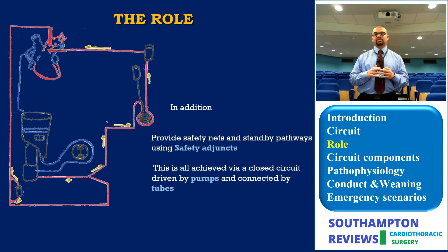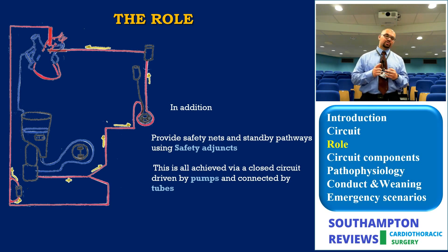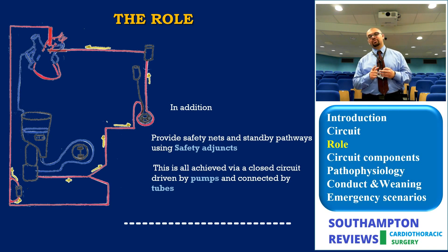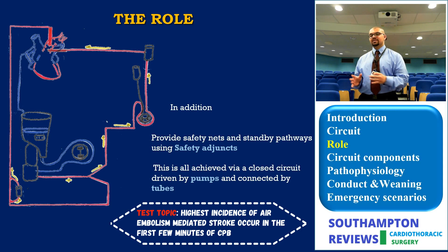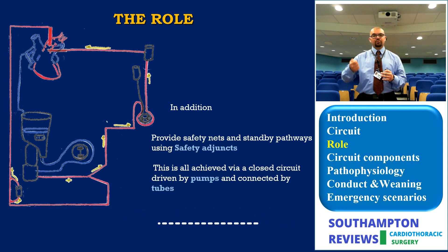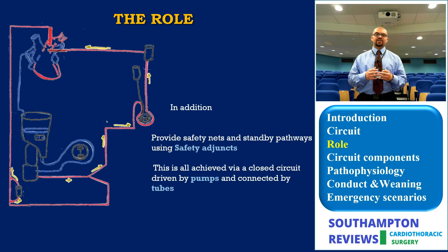All of this is achieved under a group of safety adjuncts which protect the circulation from inadvertent mistakes, errors, and emboli — whether air emboli or particulate emboli. A very important point: the highest incidence of air embolism occurs in the very first few seconds of going on bypass. This is because the priming solution is naturally at a lower temperature than the systemic circulation, and as it mixes with systemic circulation, immediate warming of the solution may extract bubbles and air. That's why various safety adjuncts exist, such as bubble detectors and the level detector.